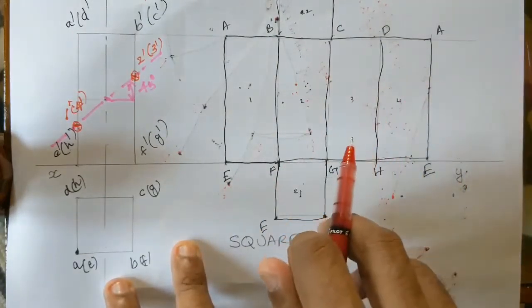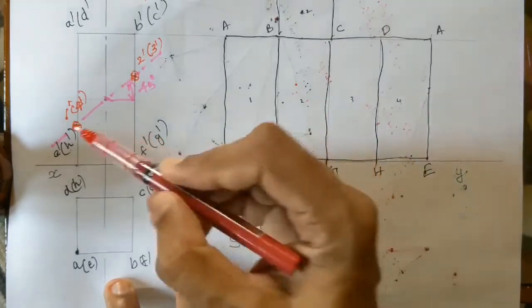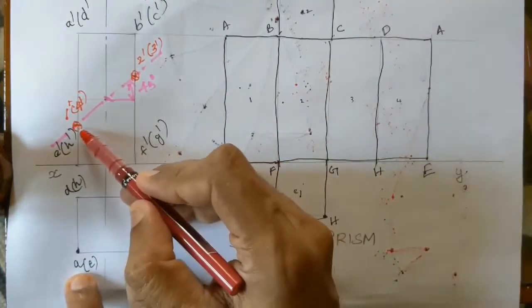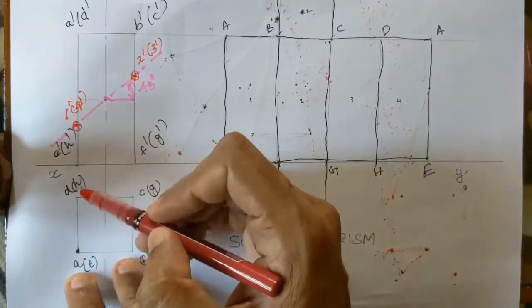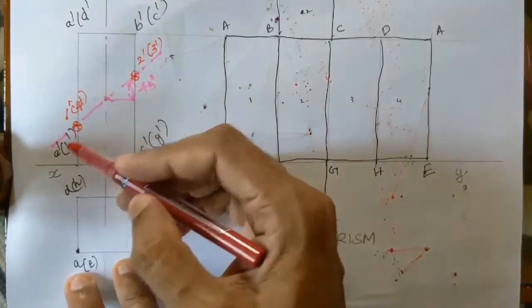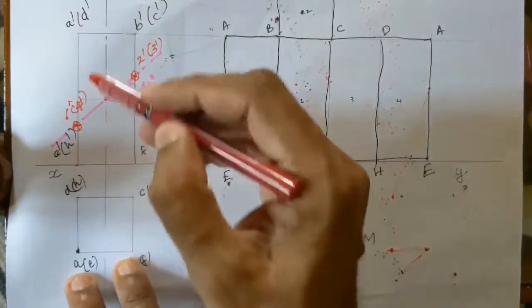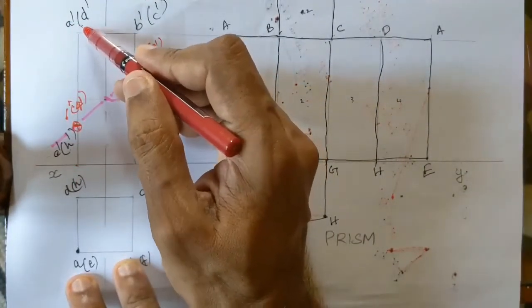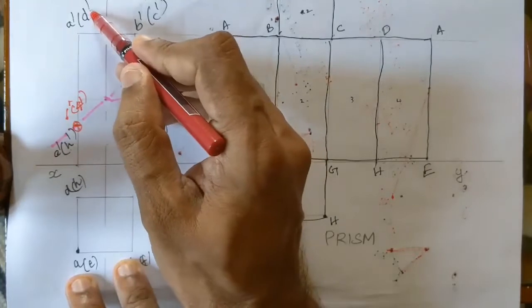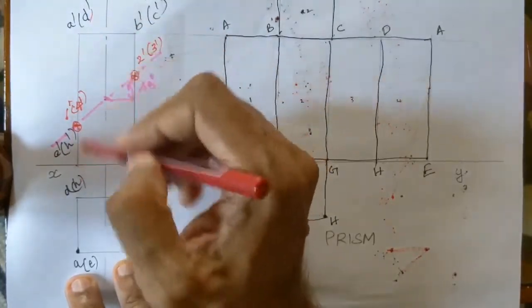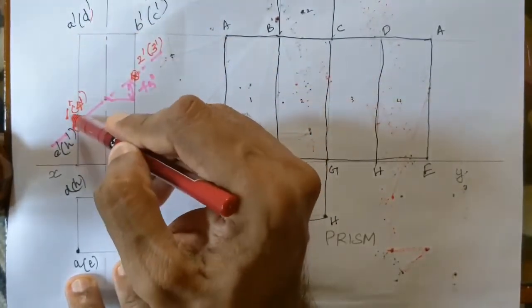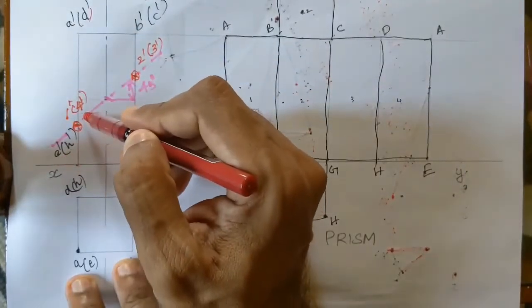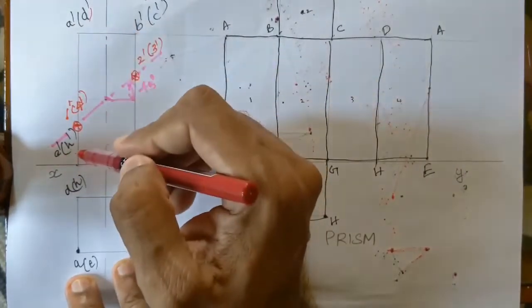The four section points are 1', 2', 3', 4'. Point 1' lies on edge A'E'. Point 4' lies on edge D'H'. We have two vertical edges involved. Points are projected accordingly from the front view.